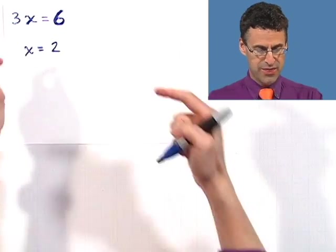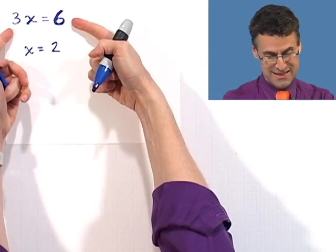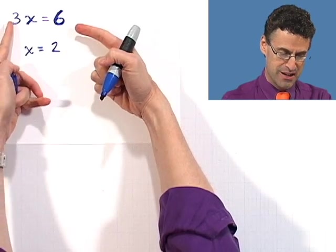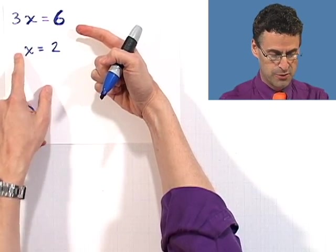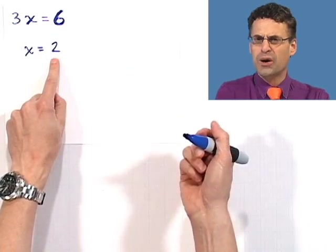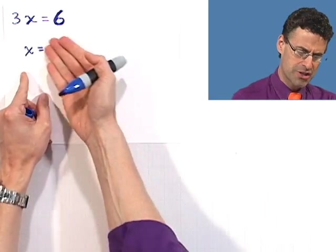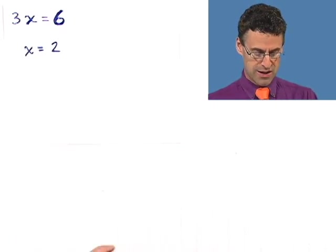Now technically this statement is different than this statement, right? Because there's a 3 in here and there's a 6 here and there's only an invisible 1 here and a 2 here. But they're equivalent. A solution here is the same as a solution here. These are equivalent equations.